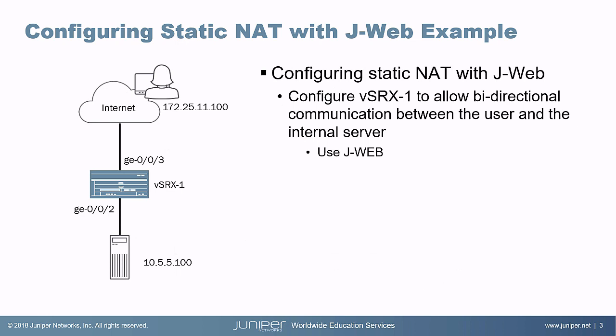So let's get to the example. Here on the slide, we have a user on the internet and an internal server that need to communicate with each other. This is a little different — it's not just the server needing to communicate with internet hosts, and it's not just internet hosts needing to communicate with the server. We need bidirectional communication. You could configure a Source NAT rule and a Destination NAT rule to accomplish a similar result, but we can configure just one Static NAT rule to meet the criteria. So we're going to configure that bidirectional communication using Static NAT with J-Web.